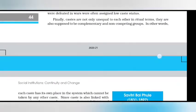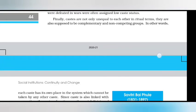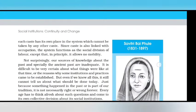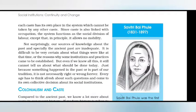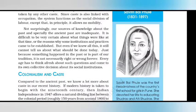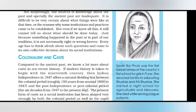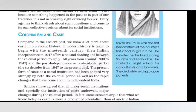Caste groups are also supposed to be complementary and non-competing — each caste has its own place in the system which cannot be taken by other castes. Since caste is linked with occupation, the system functions as a social division of labour, except that in principle it allows no mobility. Our sources of knowledge about the ancient past are inadequate, and even if we knew everything about it, it still cannot tell us what should be done today. Every age has to think afresh about its situations and come to its own collective decision about its social institutions.